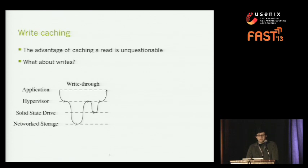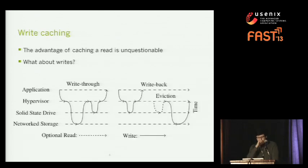The advantage of caching a read is unquestionable — we get better performance and no possible consistency risk. However, the situation with writes is more complicated. One option is to use a write-through policy where writes go synchronously to network storage and flash before notifying the application. Another option is write-back, where writes go to the flash cache and the application is immediately notified, with writes to network storage delayed or possibly lost in a crash. It's not obvious from this whether write-back will perform better, since write-back lowers latency but may add an extra read and in the worst case merely delays rather than reduces network storage writes.